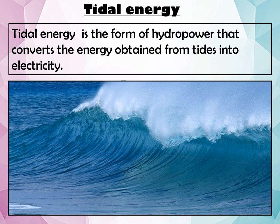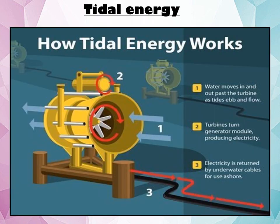Tidal energy is the form of hydropower that converts the energy obtained from tides into electricity. The given image shows the working of a tidal power generator — water moves in and out past the turbine as tides ebb and flow. Turbines turn the generator module and produce electricity, which is transmitted through underwater cables for further use ashore.